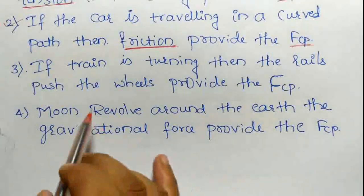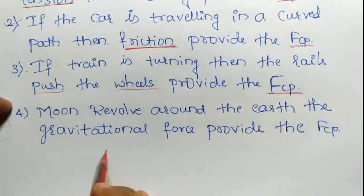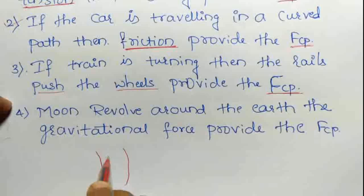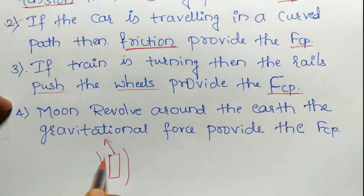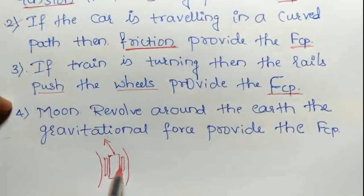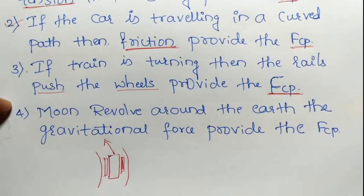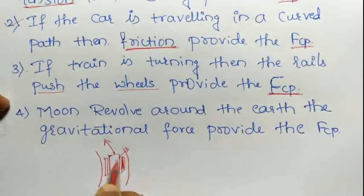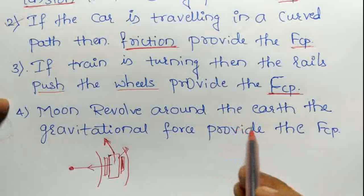Third example: if a train is turning, the rails push the wheels to provide centripetal force. The rails push the train, giving the necessary centripetal force so the train does not skid away from the rail track and travels safely.